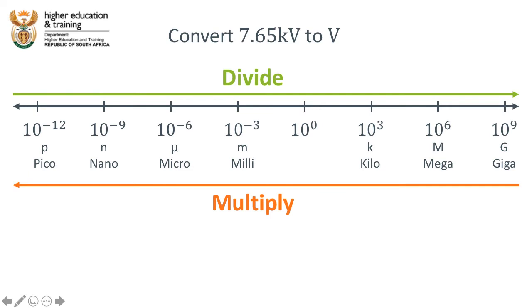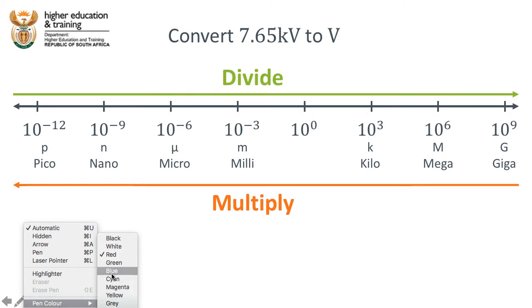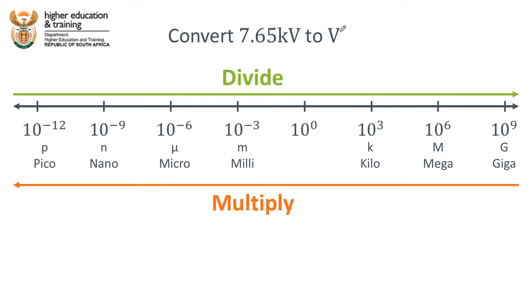In this video we're going to convert from 7.65 kilovolts to volts. Now you might be able to do this without the use of the number line because you know that kilovolts is basically just 1,000 volts, so we'd have to multiply this number by 1,000. But just in case you need to do it with the number line, let's go through it with the number line itself.